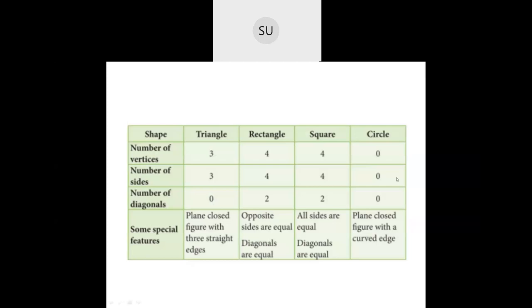Then we have a square. A square has four sides, four vertices, and two diagonals, where all sides are equal and the diagonals are also equal. Then circle — a circle has zero vertices, zero sides, and zero diagonals. It is a plane closed figure with a curved edge, whereas triangle, rectangle, and square have all straight edges.